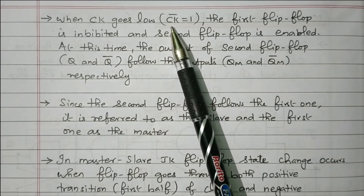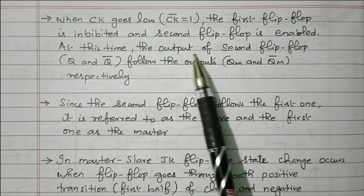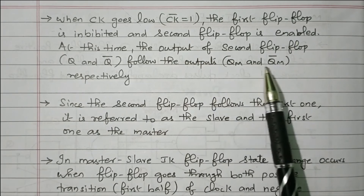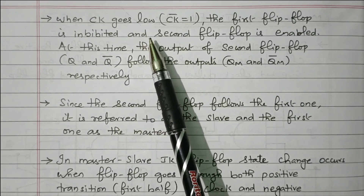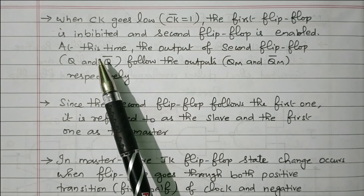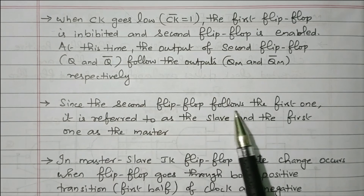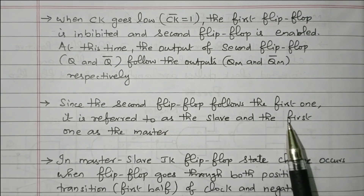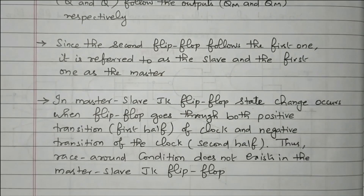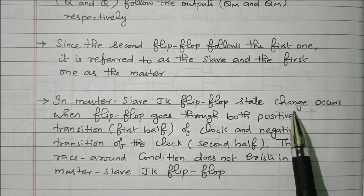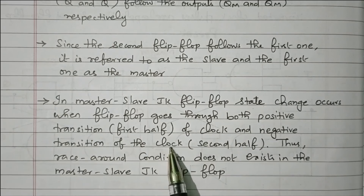When the clock pulse goes low — CK-bar equals 1 — the first flip-flop is inhibited and the second flip-flop is enabled. At this time, the output of the second flip-flop follows the outputs QM and QM-bar respectively. When the clock pulse is low, the first flip-flop is disabled and the second flip-flop is enabled. The output from the first flip-flop is applied to the second flip-flop. In master-slave JK flip-flop, state changes occur when the flip-flop goes through both the positive transition (first) of the clock and the negative transition (second) of the clock.